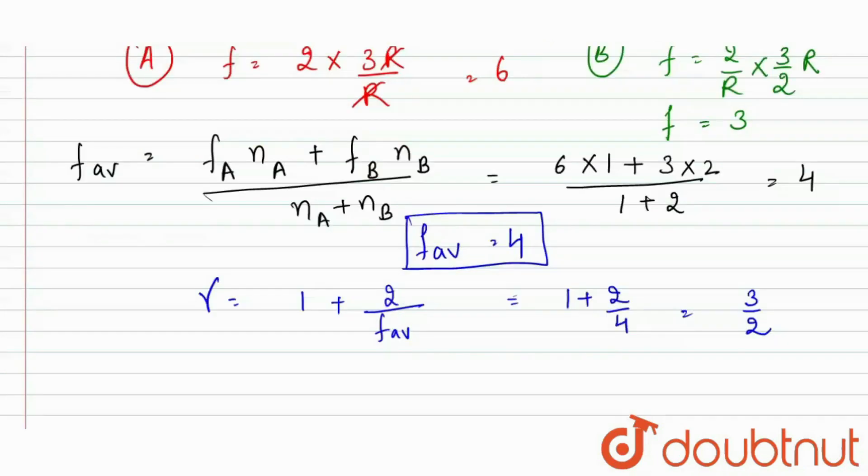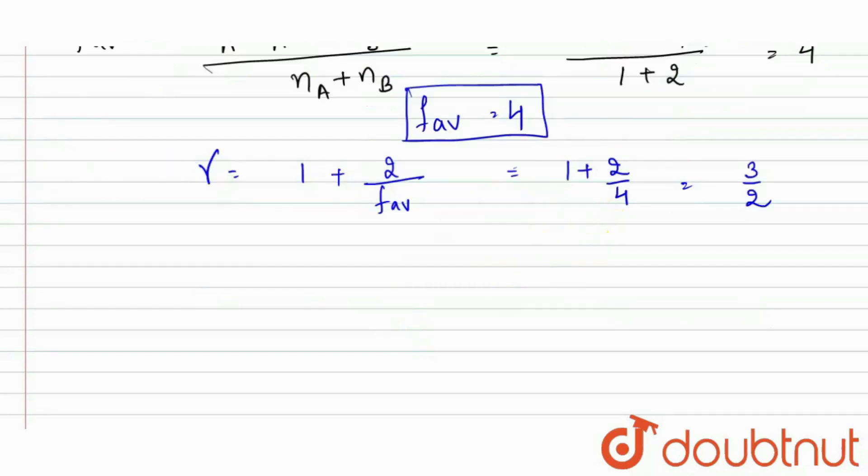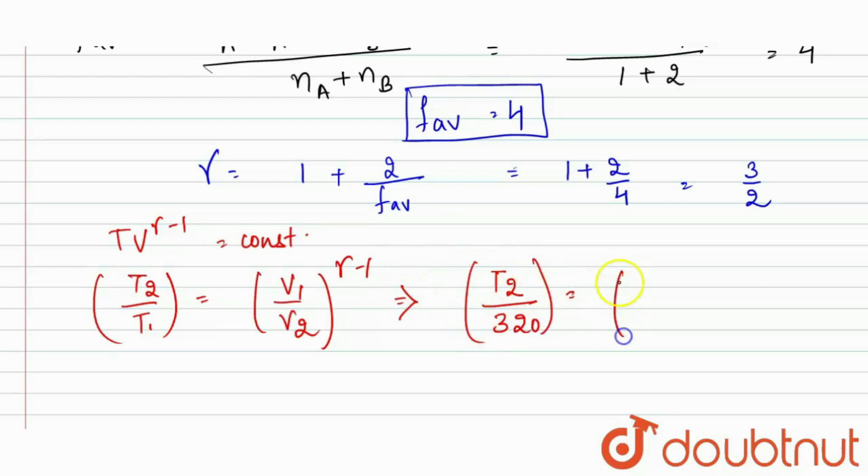Now we have our gamma value. For the adiabatic expansion, Tv gamma minus 1 equals constant. We can write it as T2 by T1 equals V1 by V2 to the power gamma minus 1. T1 is 320, so it equals 1 upon 4 to the power 3 by 2 minus 1. If we solve this, T2 upon 320 equals 1 by 4 to the power 1 by 2. From here we get T2 equals 160 Kelvin.